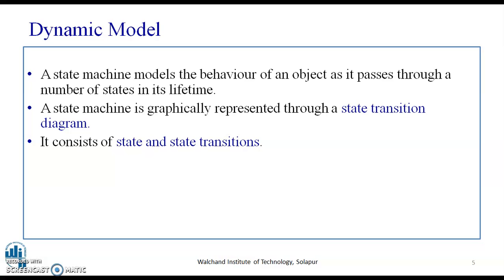A state machine models the behavior of an object as it passes through a number of states in its lifetime. The main purpose of dynamic modeling is to demonstrate the state machine model — that is, the behavior of an object as it passes through states. The state machine is graphically represented through a state transition diagram, which consists of states and state transitions.